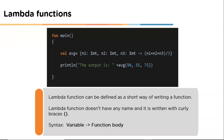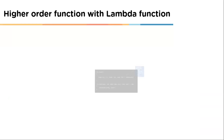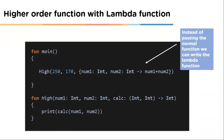Now that we've understood lambda functions and higher order functions, let's see how to use them together. Lambda functions allow us to eliminate code and write more compactly. As we can see in the example, using a lambda function instead of a normal function decreases the lines of code significantly.